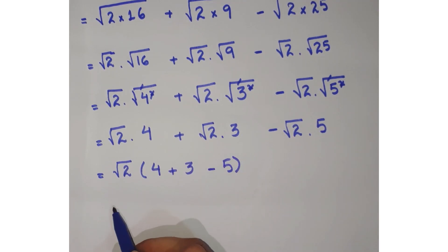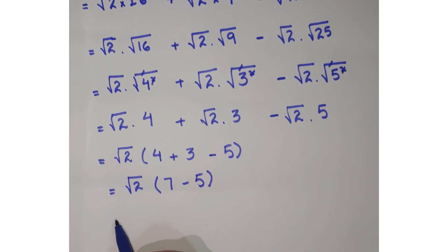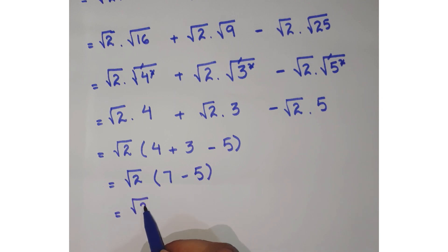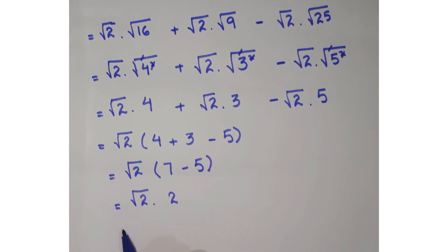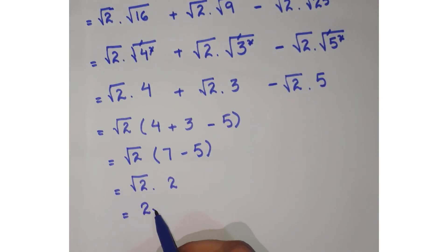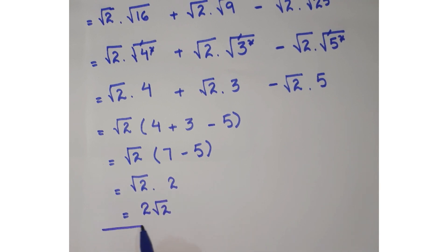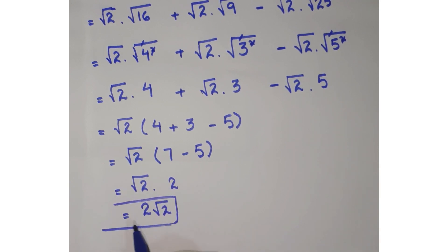Further you can simplify it as √2(7 - 5), or you can write it as √2 × 2, or 2√2 is your required answer after simplification.